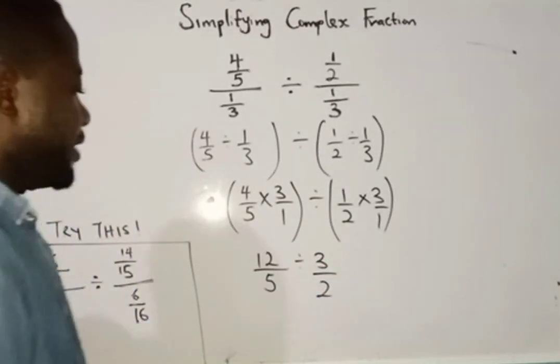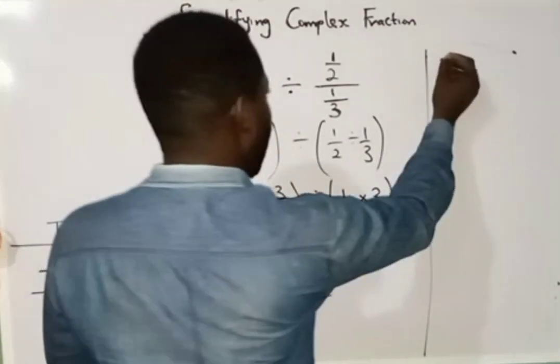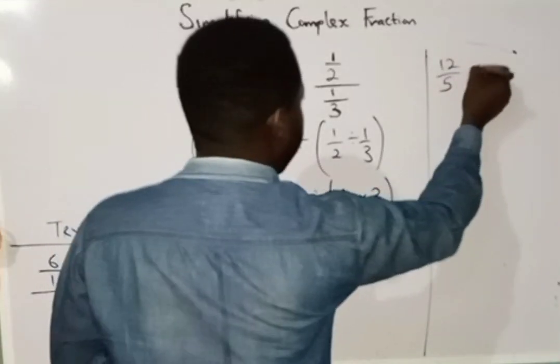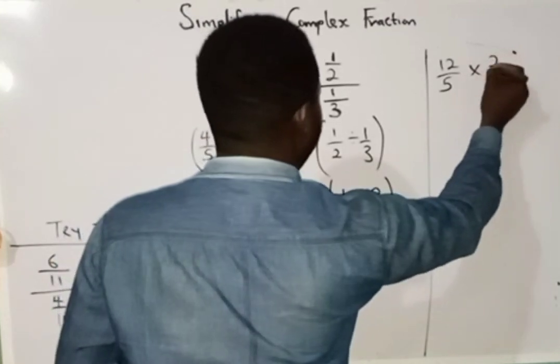Now the next thing to do, we are now going to say 12 over 5. The division sign here we change to multiplication. Then I am going to have 2 over 3.